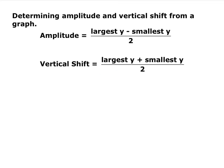If you're looking at a graph and trying to figure out the amplitude and vertical shift, or trying to write the equation from the graph, the amplitude is the difference between the max and the min divided by 2, and the vertical shift is the average of the largest y and the smallest y — add them together and divide by 2.